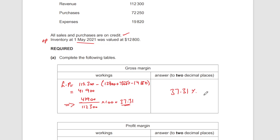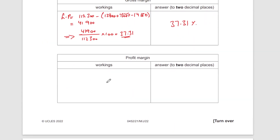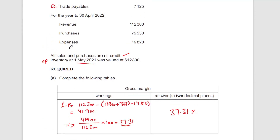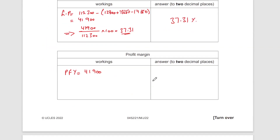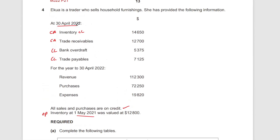Next we have profit margin, for which we need the profit for the year. Some call it net profit, but that term isn't used anymore — use 'profit for the year.' The profit for the year starts with gross profit, the same as before, but then we also deduct expenses of 19,820.